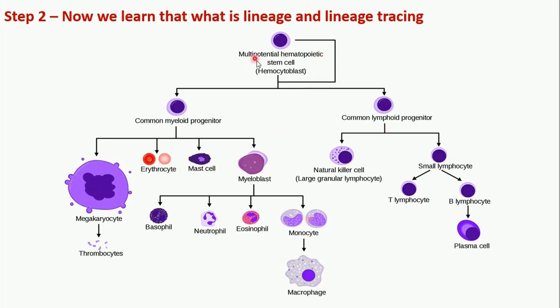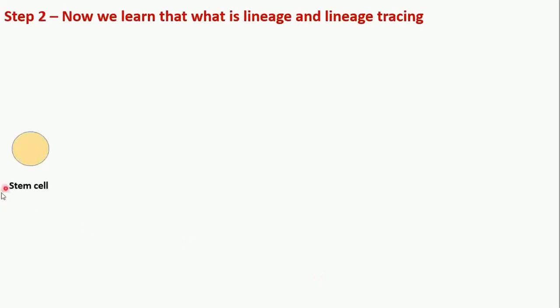So from one type of stem cell we get many types of different cells. The whole system of a stem cell and its final differentiated cells is called a lineage. Lineage tracing means we want to find out, in a system or organism, how many cells are coming from the same type of stem cell, or we want to find out the developmental pathway — including different progenitors — between the stem cell and the final cell. To understand lineage tracing with Cre recombinase and loxP sites, we will use a hypothetical example with a stem cell giving rise to progenitor 1 and progenitor 2.